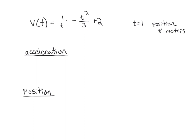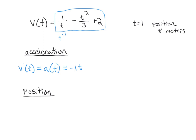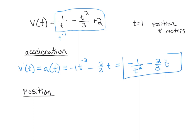Let's take the derivative of the velocity function, rewriting it as t to the power of negative one. v prime of t, which is the same as the acceleration a of t: using the power rule, bring the power down — negative one times t to the negative two — minus two-thirds t. The constant two cancels out, so we can also rewrite this as negative one over t squared minus two-thirds t. That gives us the acceleration function.